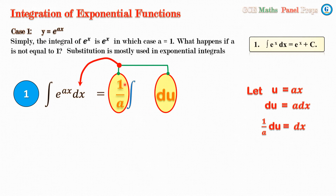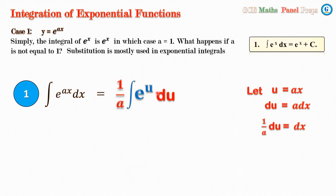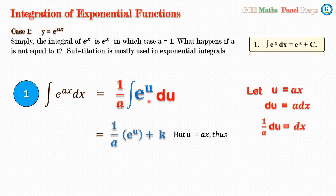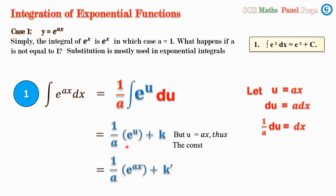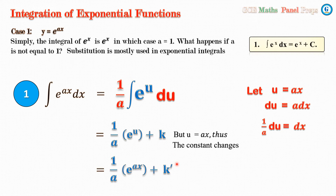At this point we write the integral as (1/a) times the integral of e^u du. This is our dx which has been substituted, and e^(ax) has become e^u. We can now easily integrate this, because the integral of e^x dx is e^x plus a constant. So this gives us (1/a) e^u + C. We know that u = ax from our substitution, so we replace u to get (1/a) e^(ax) + K. The constant has changed because we have done a transformation from integrating with respect to du back to x.